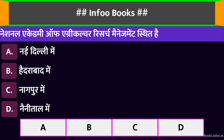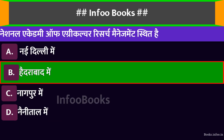National Academy of Agriculture Research Management स्थित है। Option A: नई दिल्ली में। Option B: हैदराबाद में। Option C: नागपुर में। Option D: नैनीताल में। सही विकल्प है: हैदराबाद में।